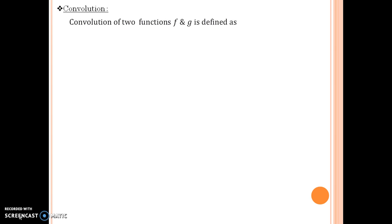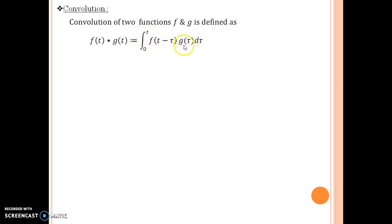Let us see the definition of convolution. Convolution of two functions f and g is defined in this following manner: f of t star g of t is equal to the integral from 0 to t of f of t minus tau times g of tau d tau. One important remark is that this star operator is not the regular multiplication of two functions — it is the convolution operator, defined in this manner.